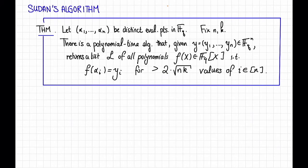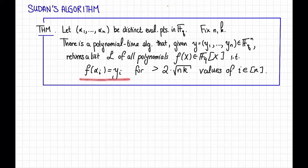We'll see the details in a moment, but first let's see what we can get out of it. This is called Sudan's algorithm. So here's a theorem: let alpha_1 through alpha_n be distinct evaluation points in F_q, and fix parameters n and k. Then there is a polynomial time algorithm — Sudan's algorithm — so that given an input y in F_q to the n, it returns a list L that contains all polynomials f(x) over F_q such that f agrees with y in more than 2 times the square root of nk values of i from 1 to n.